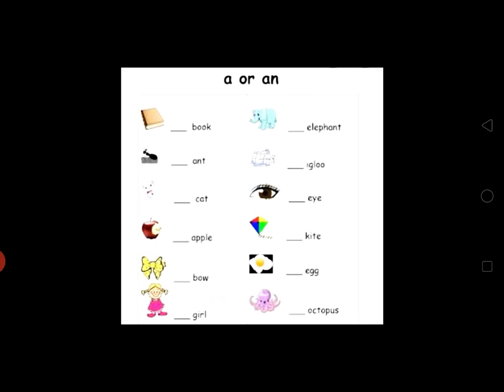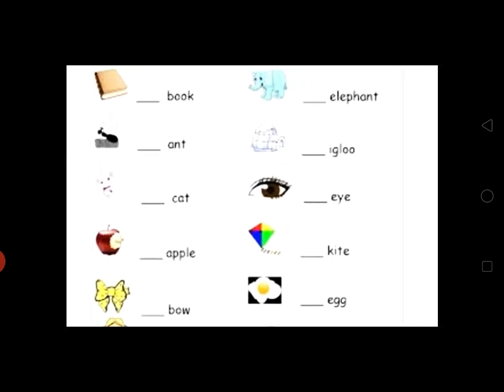Let's practice. 'Book' — 'B' is a consonant letter, so we use 'a': a book. 'Ant' — 'A' is a vowel sound, so we use 'an': an ant. 'Cat' — 'C' is a consonant letter, so we use 'a': a cat. Very good!